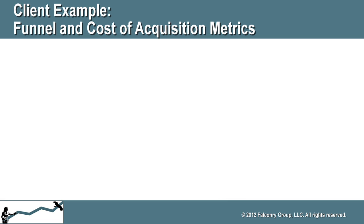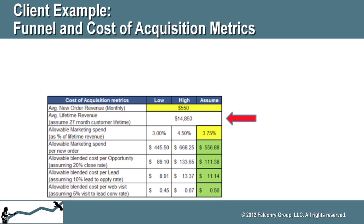Here's a simplified version of how we came up with the leads quota. First, we worked with their finance team to determine two numbers: the average customer lifetime value, which is the total revenue expected from a customer over its lifetime, and the marketing cost of acquisition, or marketing allowance — the amount that marketing is allowed to spend for one new customer.